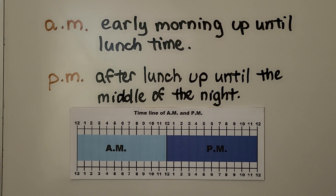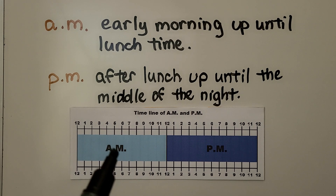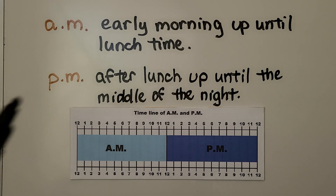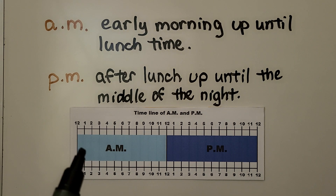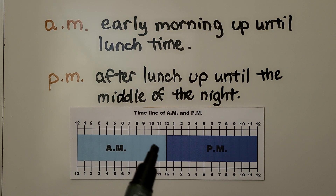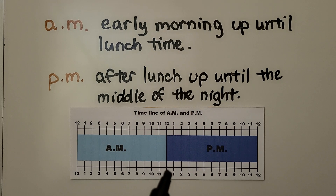AM might be written with capital A and capital M with periods in between them, or it might be written in lowercase — either way is okay. AM is early morning up until lunchtime, covering all of the morning up until 12 noon.